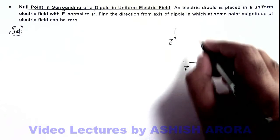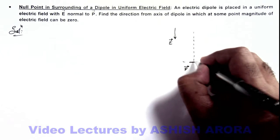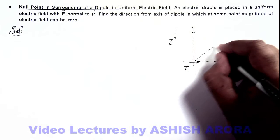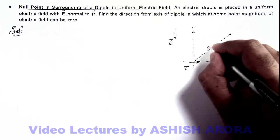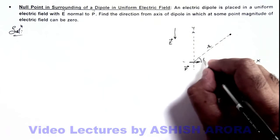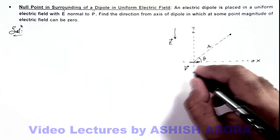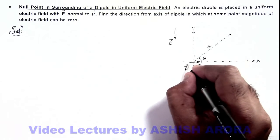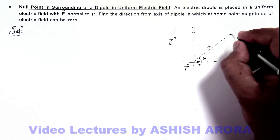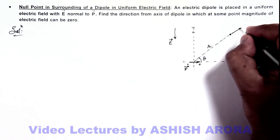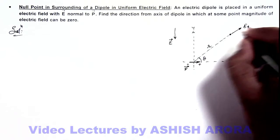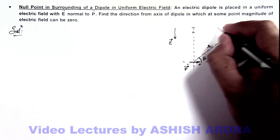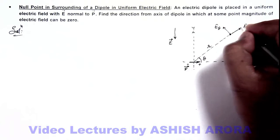If we consider the equator of the dipole as the y-axis and consider a point P located at a distance r and at an angle theta from the axis of this dipole, then due to this dipole's charges, the electric field at point P is in the radial direction away from it and in the transverse direction perpendicular to the radial line. These two components are E-theta and E-r.